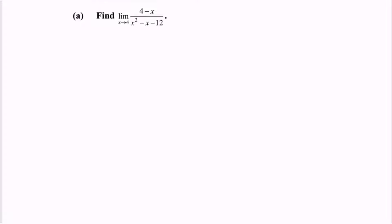The first problem: find the limit when x approaches 4 for the function (4 minus x) over (x squared minus x minus 12). If we substitute the value 4 into the function, we obtain 0 over 0, which we call the indeterminate form.